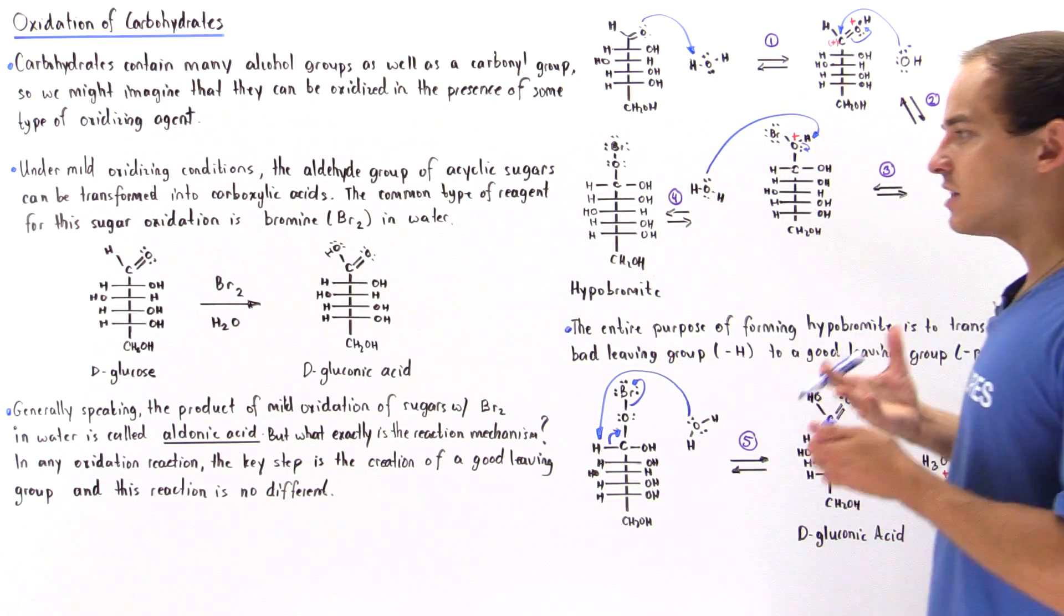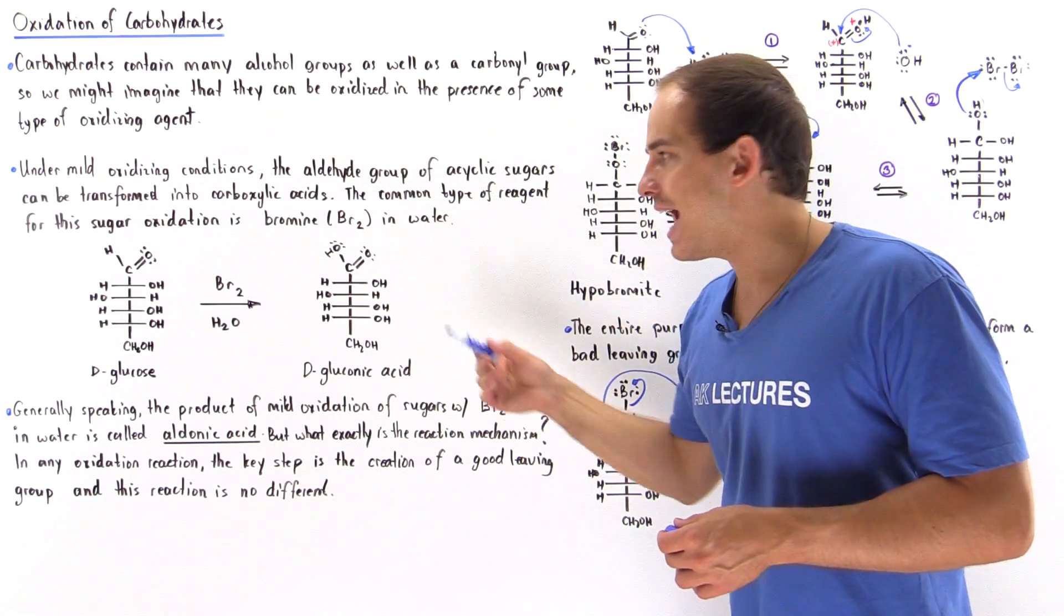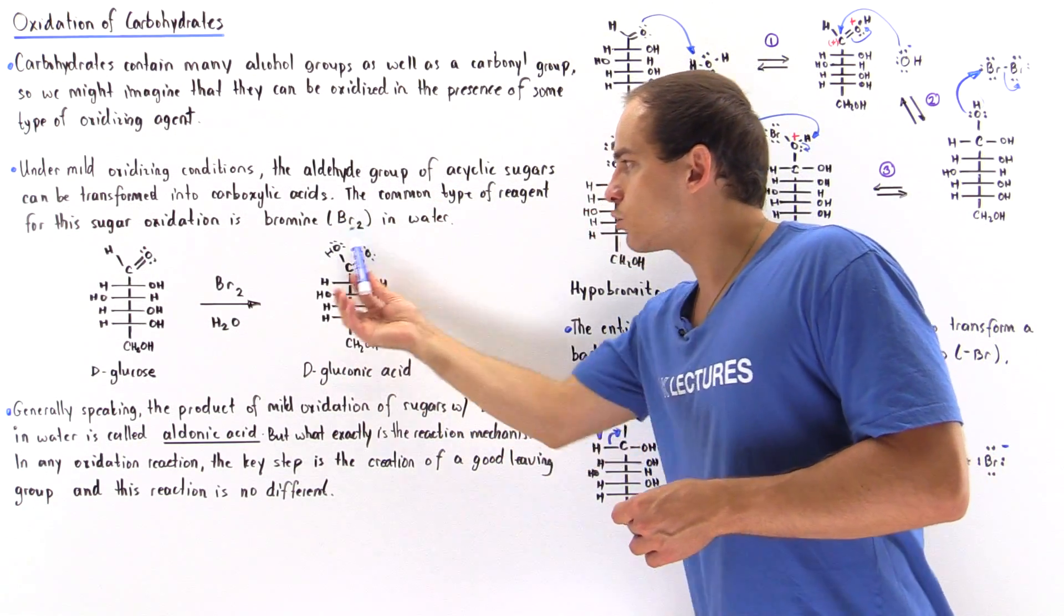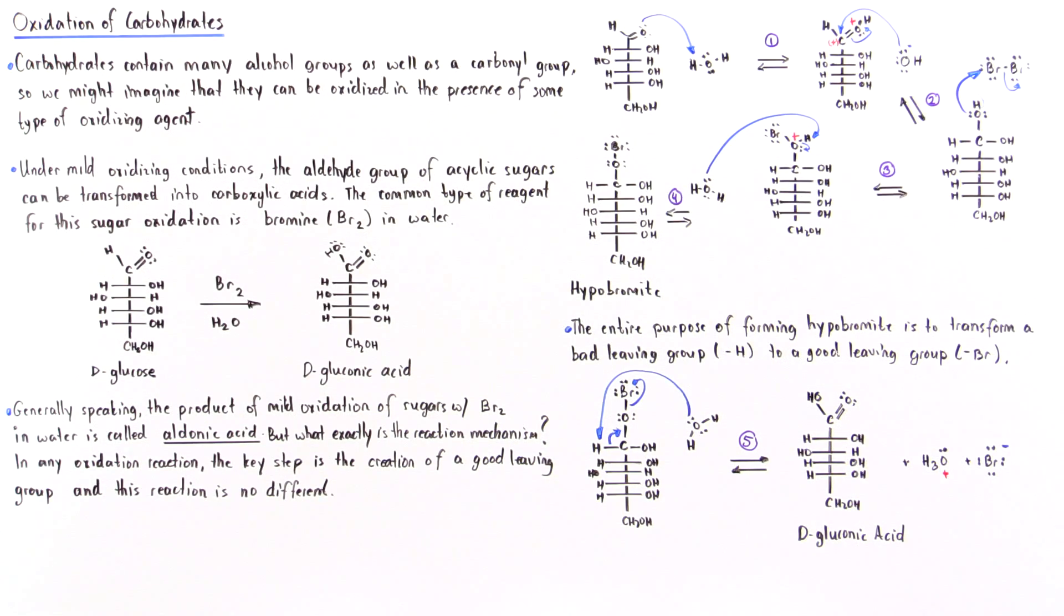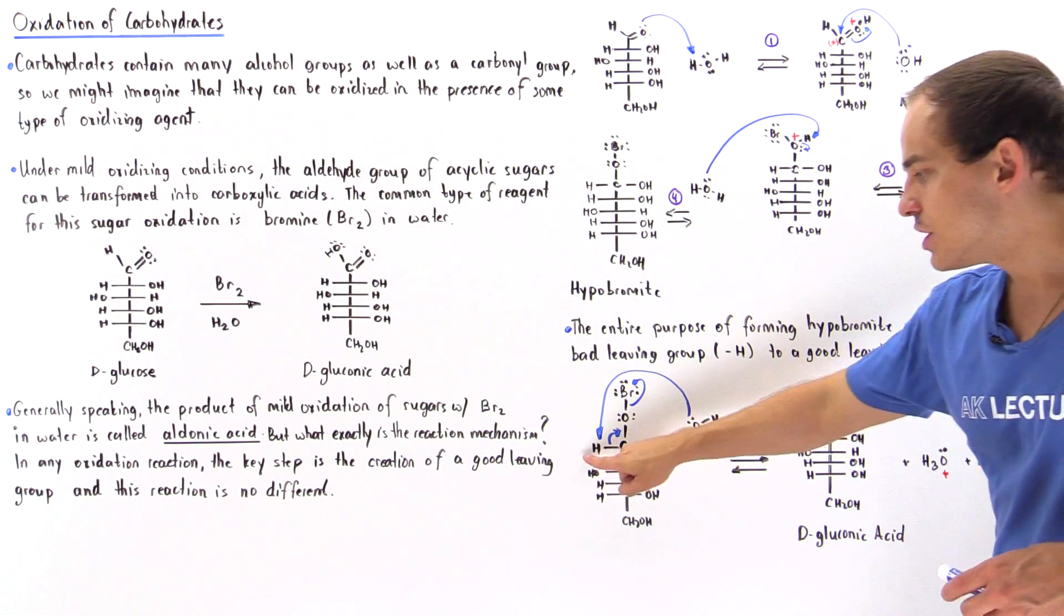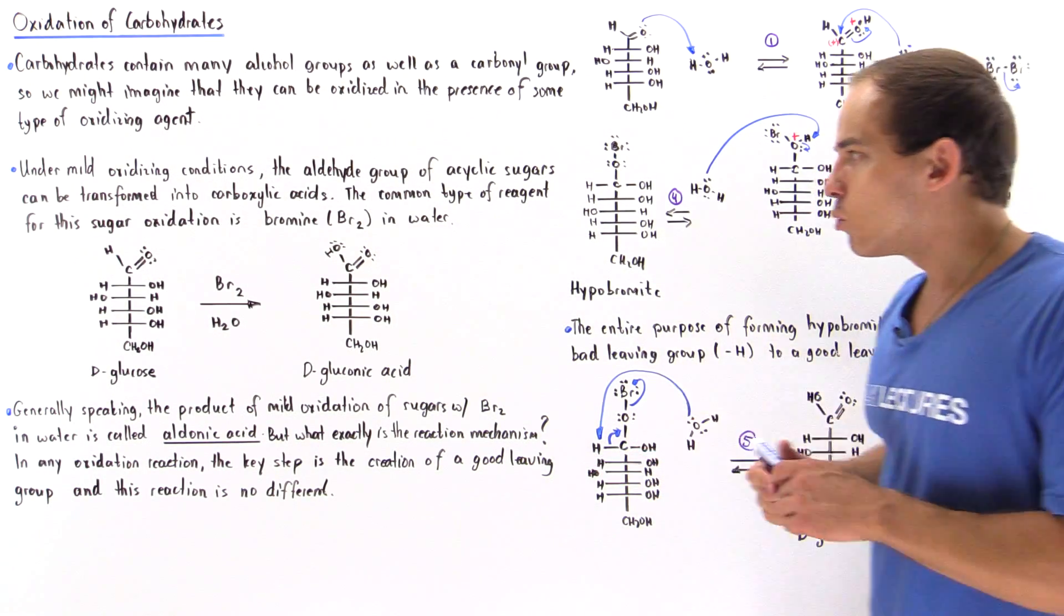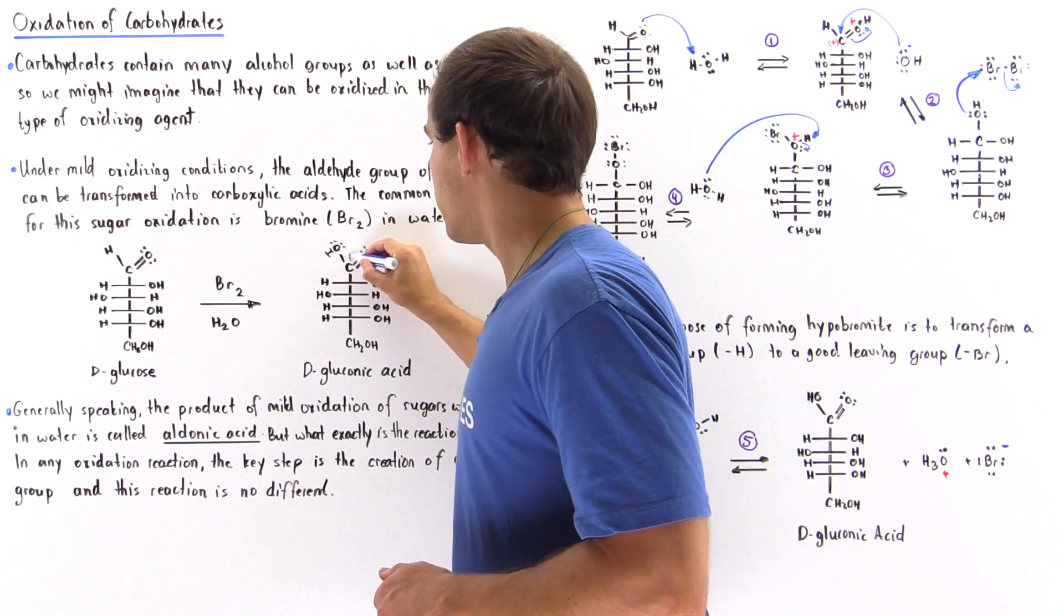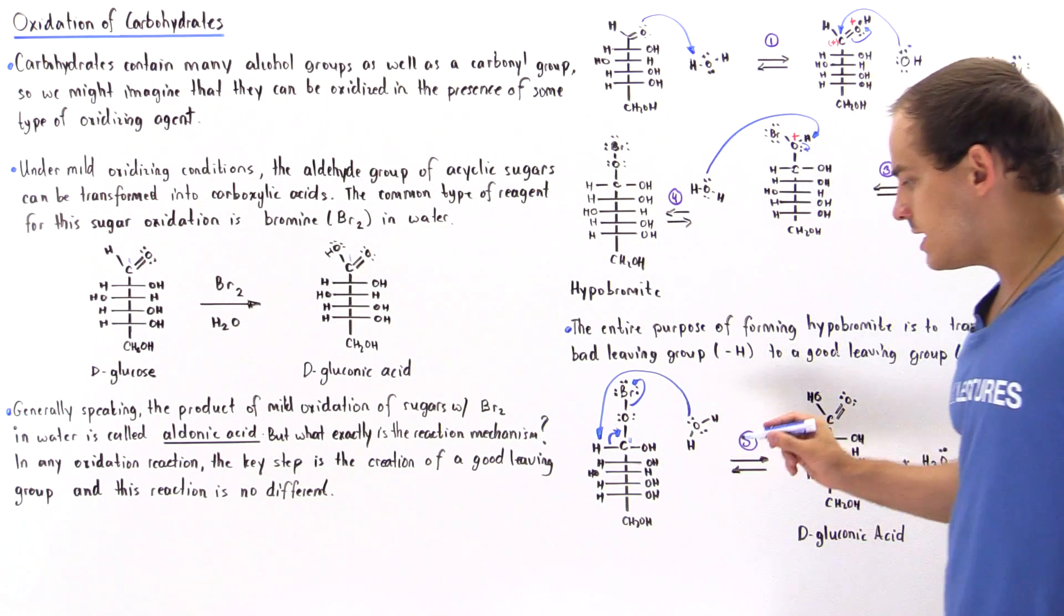And this is exactly what allows us to form our D-gluconic acid, this carboxylic group on this section of our molecule in the final step, in step five. So in step five, a water molecule basically deprotonates this H atom off of our carbon number one. Where this is carbon number one here, this is carbon number one here, and this is carbon number one here.